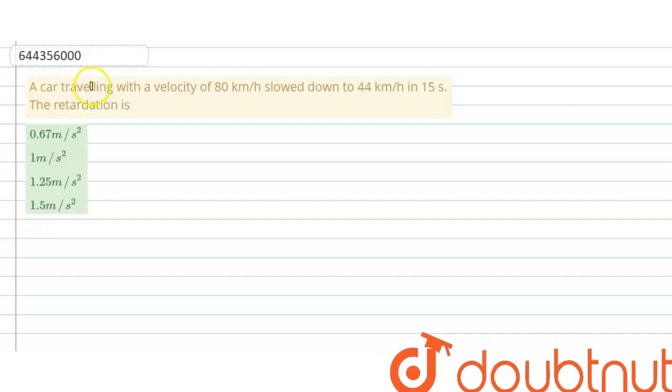Download Doubtnut app today. Hello everyone, let me explain this question to you. A car travelling with velocity 80 km per hour slowed down to 44 km per hour in 15 seconds. The retardation is, and there are 4 options given.